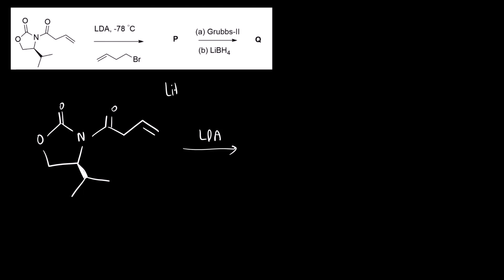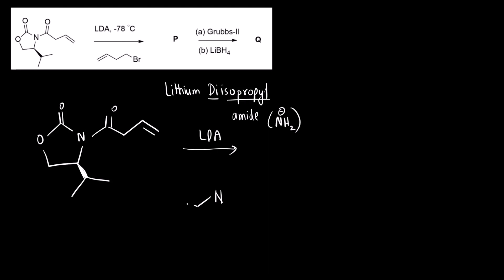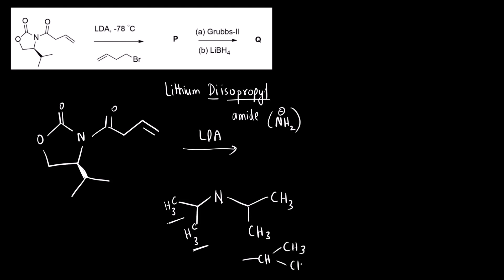The first reagent given is LDA. What is LDA? LDA is a strong base — lithium diisopropyl amide. It is like an inorganic amide NH2 minus, but instead of hydrogen we have two isopropyl groups. Di means two. Isopropyl is a three-carbon group: CH(CH3)2. There is a negative charge and the counter ion is lithium ion. It is a very strong base because it can easily abstract the acidic proton.